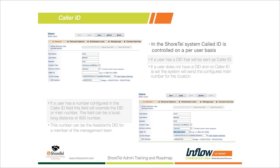For executive or management teams, a common setup is to use the executive assistant's DID as the executive's caller ID. That way, when the executive places an outbound call and the customer calls back, the call still gets routed through the executive assistant rather than going directly to the executive's desk.